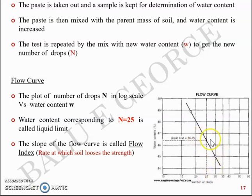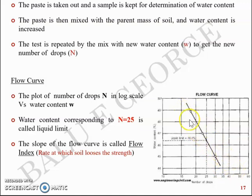Looking at the plot, the water content corresponding to N = 25 is what we are interested in. We take at least four or five readings — two above N = 25 and two below N = 25 — so that we can plot a best-fit line through all the points and accurately determine the water content at N = 25, since in an experimental procedure we cannot be precisely sure at which water content N = 25 will occur.